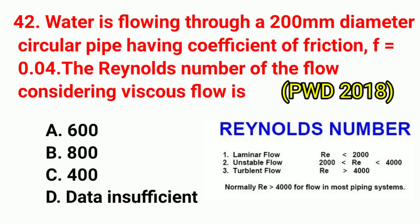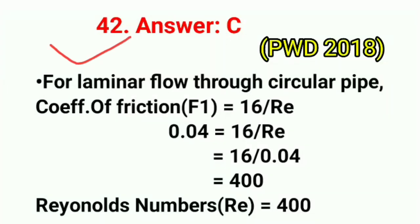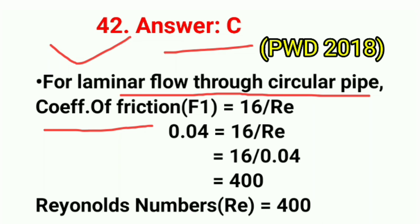Question No. 42. Water is flowing through a 200 mm diameter circular pipe having coefficient of friction F = 0.04. The Reynolds number of the flow considering viscous flow is? Correct answer is option C: 400. For laminar flow through a circular pipe, coefficient of friction F = 16/Re. So 0.04 = 16/Re, giving Re = 16/0.04 = 400.